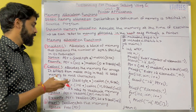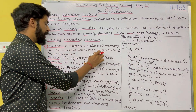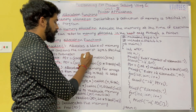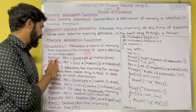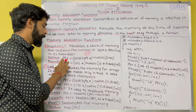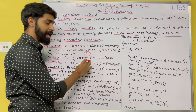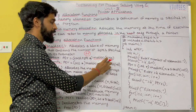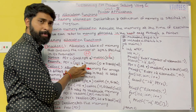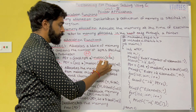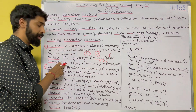The malloc function allocates a block of memory containing the number of bytes specified in its parameter. For example, if you want 20 bytes, you allocate it with malloc. The syntax is: ptr = (cast_type*) malloc(size). If it is an integer, the cast type is int*. For example: ptr = (int*) malloc(10 * sizeof(int)). Since sizeof int is 4, this allocates 40 bytes of memory to pointer ptr.